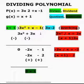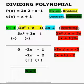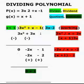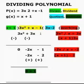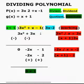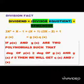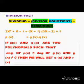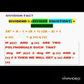Now let us write the division fact for this. So what is the division fact? Dividend is equal to divisor into quotient plus remainder.